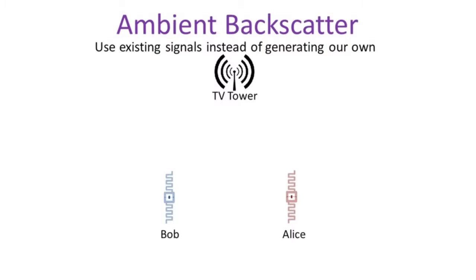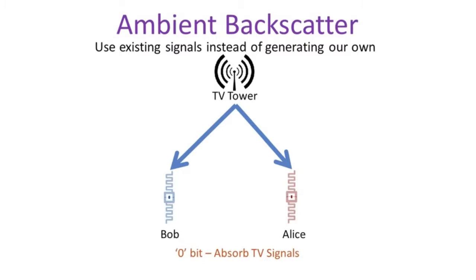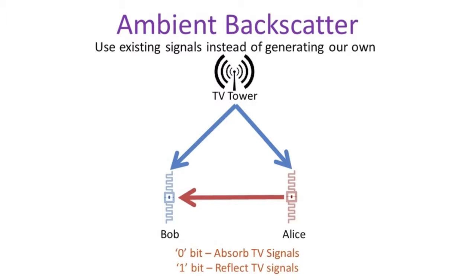Alice can send a message to Bob by either absorbing or reflecting signals from a nearby TV tower. For example, Alice sends a zero bit by absorbing all the incident TV signals and a one bit by reflecting these TV signals. Alice and Bob do not generate their own RF signals and they use no batteries. Thus, Ambient Backscatter enables wireless communication out of thin air.